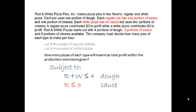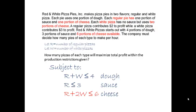Now cheese. Each regular pizza uses one portion of cheese, and each white pizza uses two portions of cheese. So the cheese used by all the pizzas will be one R plus two W. Since six portions is the limit of available cheese, R + 2W, the cheese used, must be less than or equal to six, the cheese available.